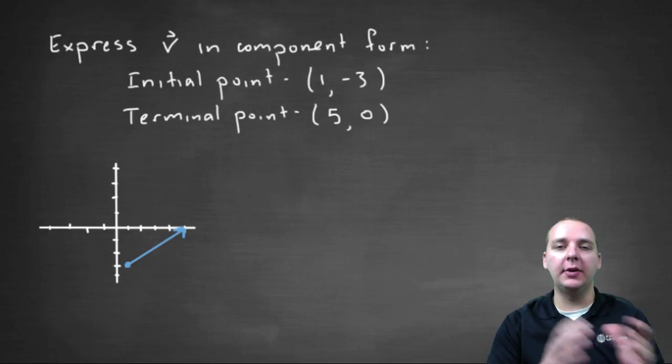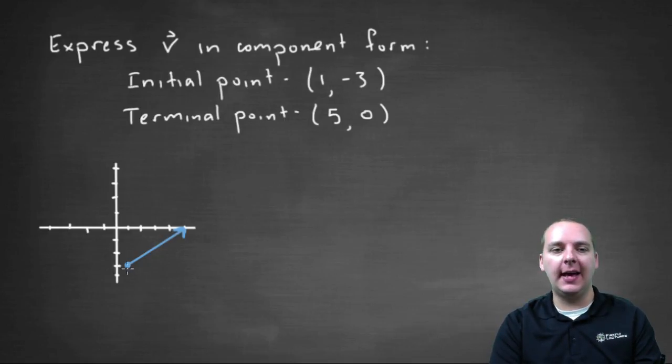So here we're trying to write a vector in component form that has an initial point at one negative three and a terminal point at five zero.